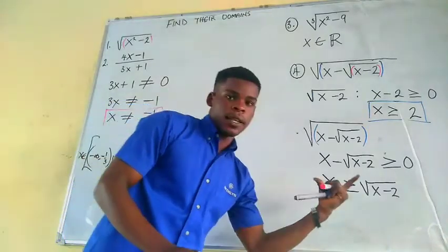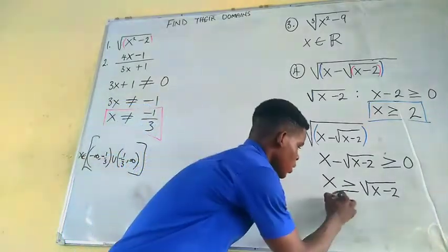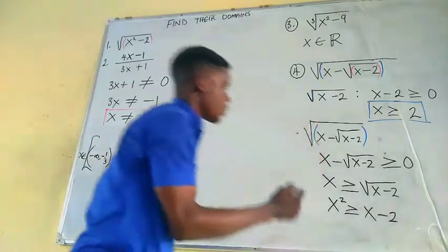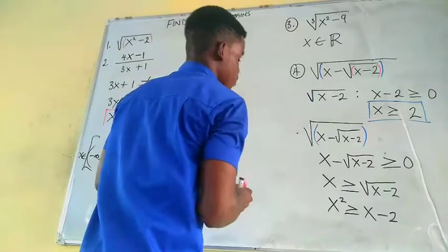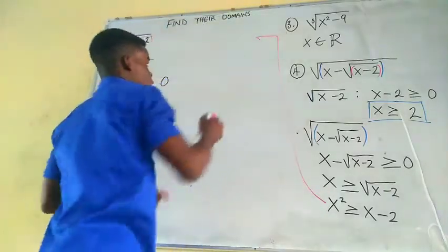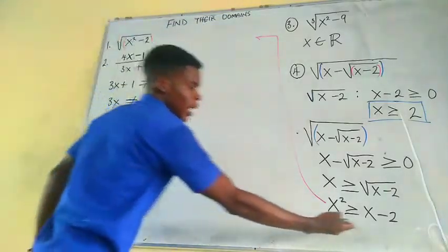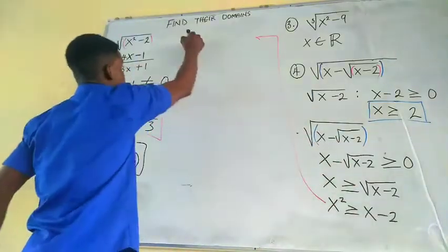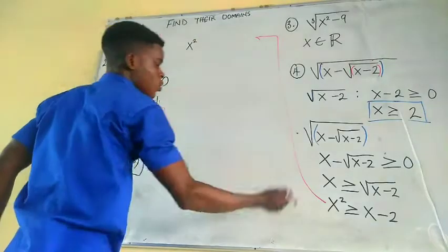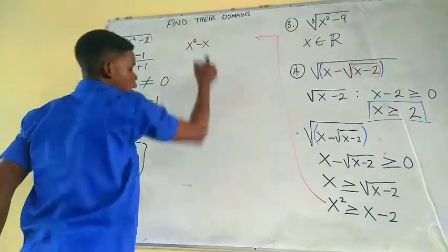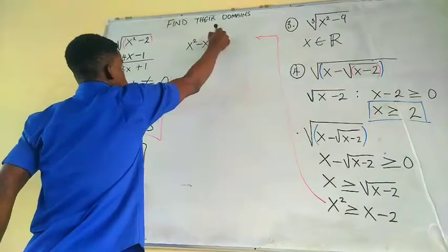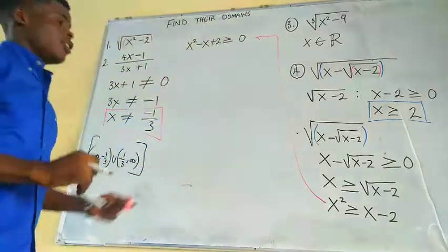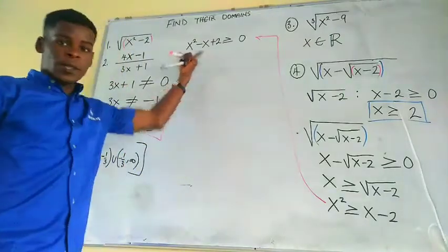Taking the square of both sides of x ≥ √(x−2), we get x² ≥ x − 2. Moving everything to the left-hand side gives x² − x + 2 ≥ 0. The left-hand side is a quadratic expression.